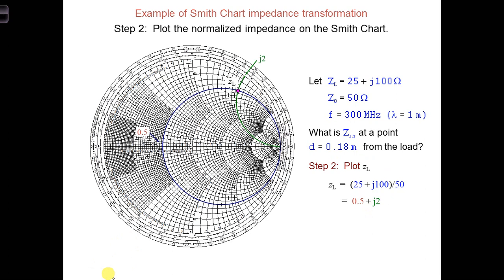Then we need to plot this on the Smith chart. So we find the R equals 0.5 circle and the positive 2 arc for X. And where they intersect, right here, that's our Z_L.